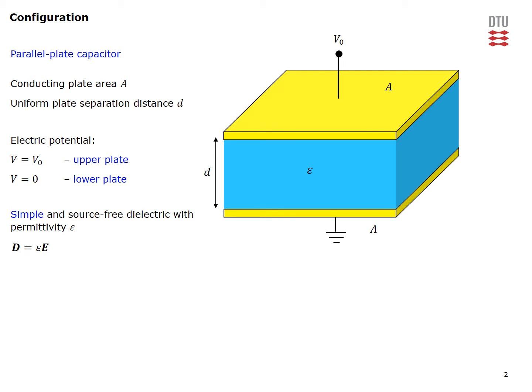Here we can see the configuration of the parallel plate capacitor, which is the same as the one considered in video problem five. We have the upper plate and lower plate — both have surface area A and they are separated by a uniform separation distance d. The space in between the conductors is filled with a simple and source-free dielectric material with permittivity epsilon, so that there is a simple relationship between the D and E fields inside of the capacitor. The upper plate is kept at a constant potential V0 while the lower plate is grounded so its potential is equal to zero.